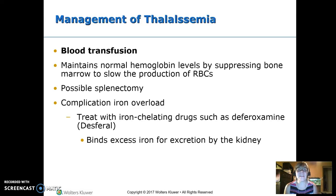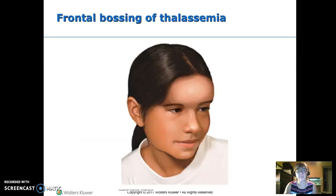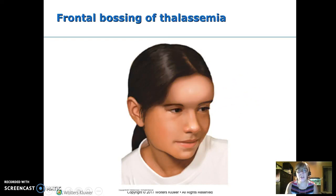Treatment is blood transfusions because the patient cannot make enough blood to keep up, and the bone marrow is overworking trying to compensate. Suppressing that overaction requires giving blood. The spleen may also need to be removed. By giving all this blood, we must watch for iron overload, which may need to be treated with chelating drugs. When the bone marrow is overproducing, the frontal bone can overgrow, causing frontal bossing.